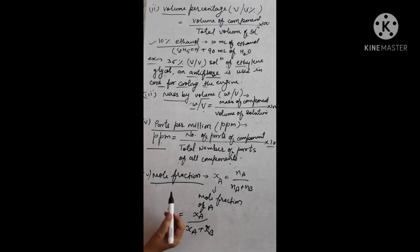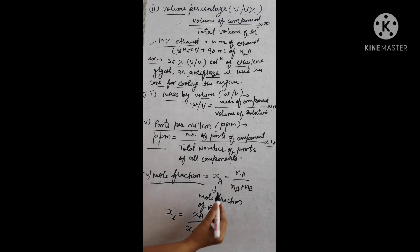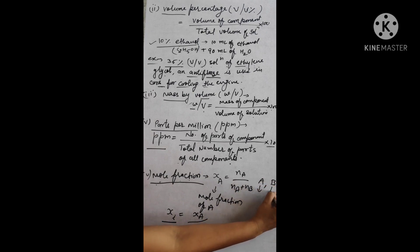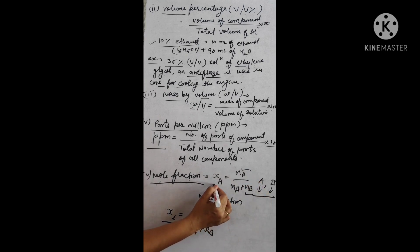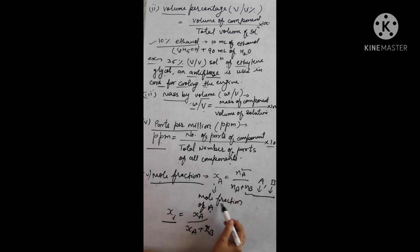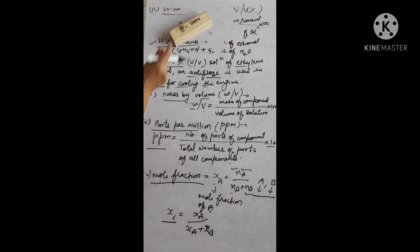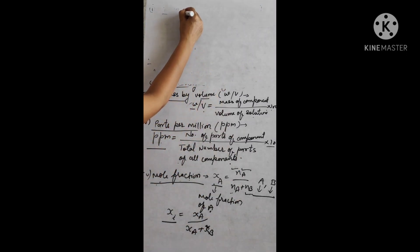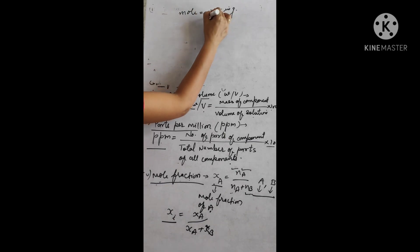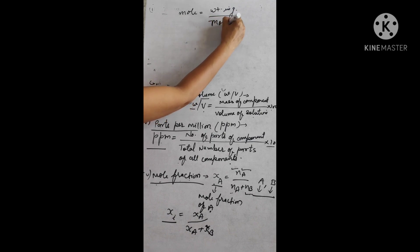The next important method, studied in Class 11, is mole fraction. This is the fraction of one mole of a substance. If we have a solution with component A (solute) and component B (solvent), we calculate mole fraction xA and xB. First, recall that mole = weight in grams divided by molecular mass. Mole is denoted as n, weight in grams as w, and molecular mass as M.